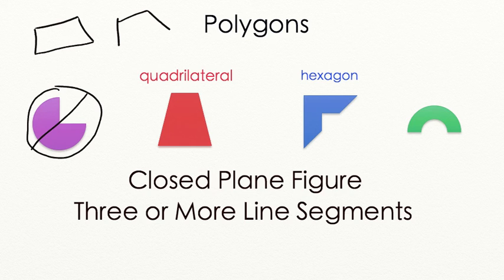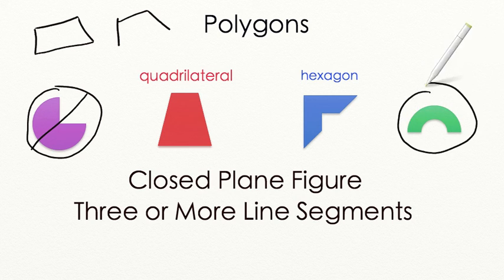Let's look at our last figure. This figure is also a closed plane figure but look, it has a rounded side to it that is not a line segment. So this cannot be a polygon.